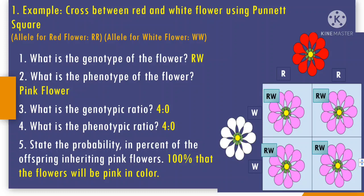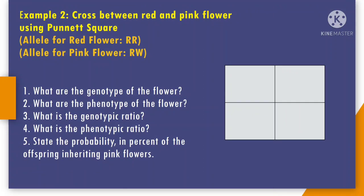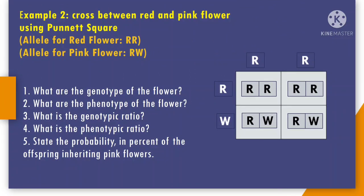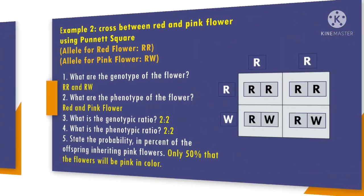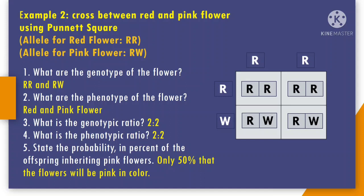Now let's move on to example number 2: a cross between red and pink flower using a Punnett square. We have the allele R for red flower and RW for pink flower. After completing the Punnett square, let us answer questions 1 to 5. For number 1, what are the genotypes of the flower? Our answer is RR and RW — based on the Punnett square, there are two RR and two RW.